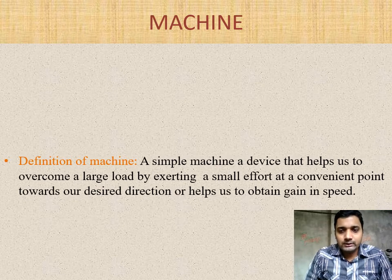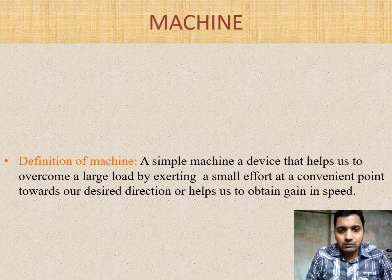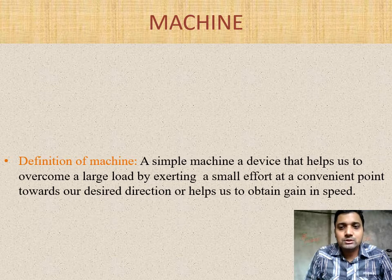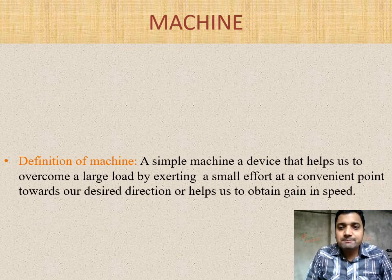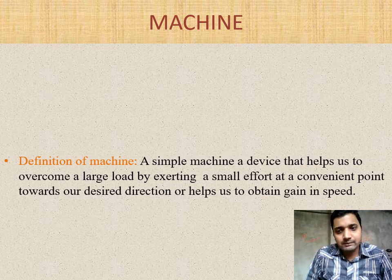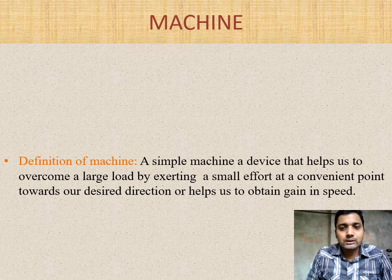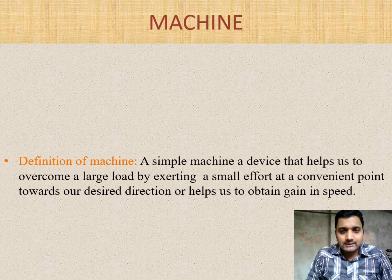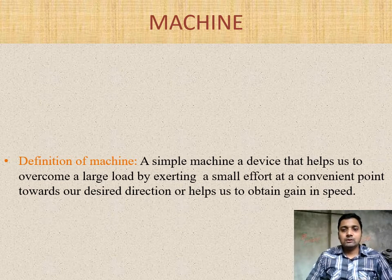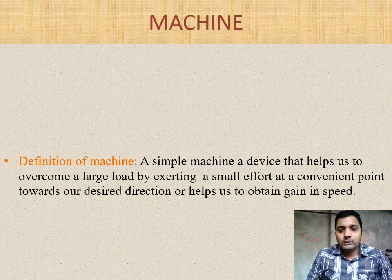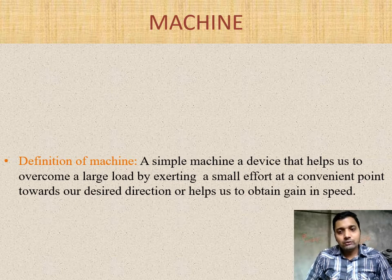So a machine is used for two reasons: gain in force, also called a force multiplier, or gain in speed, called a speed multiplier. By using less force you can do the work, or we can do the work in less time. For that reason we are using the machine — whichever substance around us makes our work easier or faster.